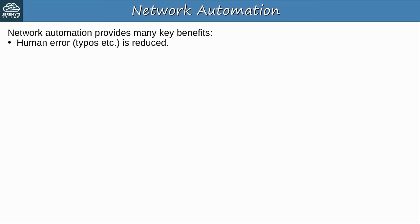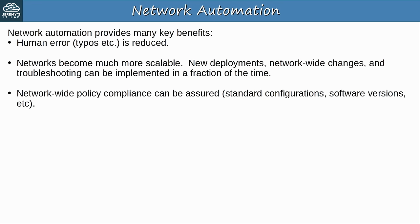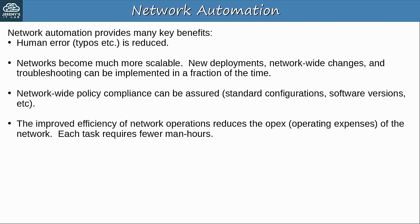Network automation offers many key benefits. First, human error is reduced — for example, typos. Instead of a network engineer directly logging into the CLI and manually entering commands, the task can be automated. Networks become much more scalable; new network deployments, network-wide changes, and troubleshooting can be implemented in a fraction of the time. Network-wide policy compliance can be assured, making sure all devices have the proper standard configurations and correct software versions. The improved efficiency reduces OPEX — operating expenses — of the network, as each task requires fewer man hours and engineers can focus on more important things.